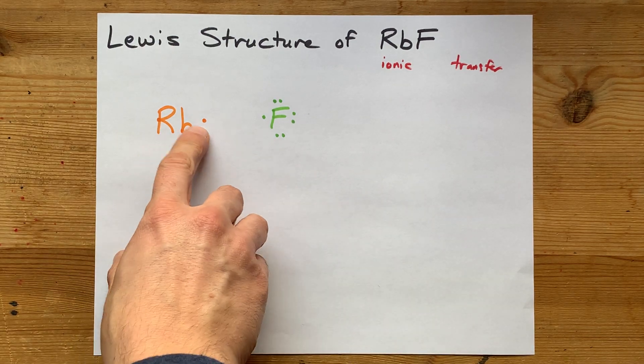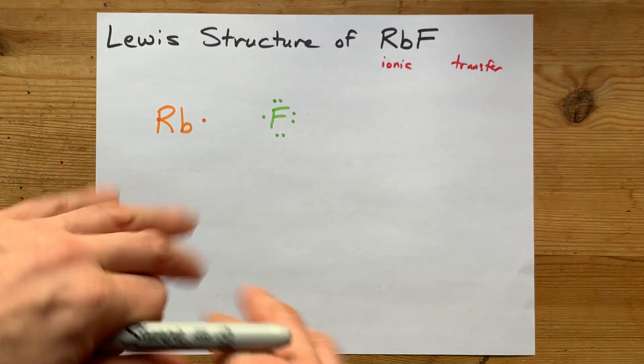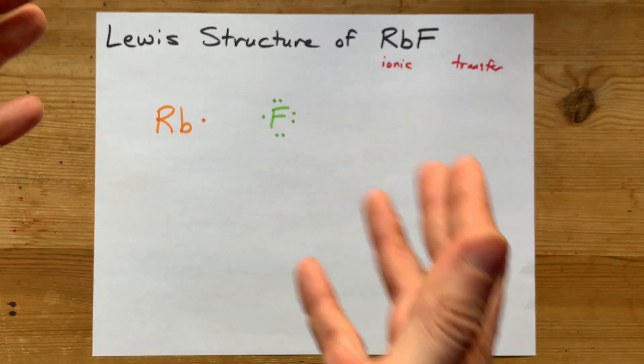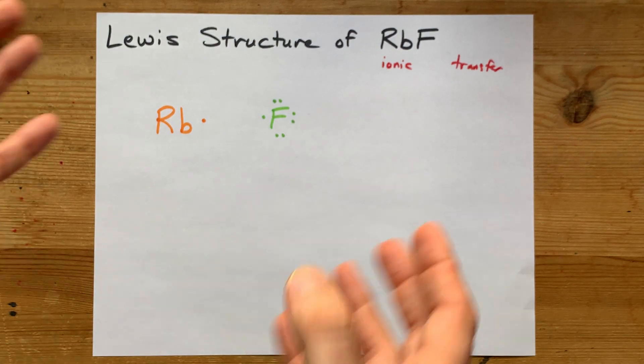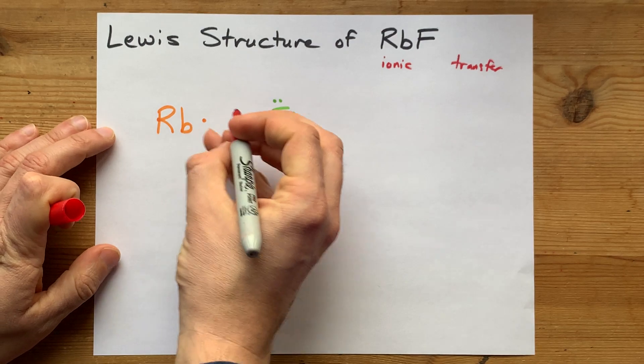Now, rubidium is going to give away its electron, which means that empty outer shell is no longer the outer shell because it's empty. But the next one in is full, so that's satisfying too.